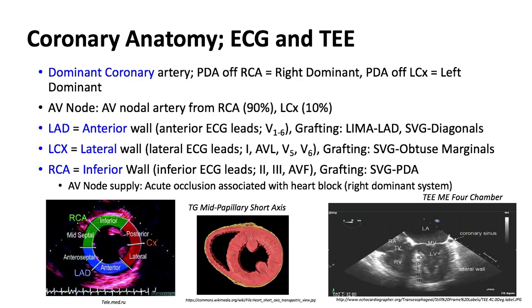The dominant coronary artery, by definition, is the coronary artery that gives off the posterior descending — which is usually the right coronary artery, but occasionally the posterior descending can come off the left circumflex, and then it's called a left dominant system. The AV node is usually supplied by the right coronary artery in 90% of patients, but in about 10% by the left circumflex. If someone had a right coronary artery occlusion and the AV node didn't get good blood supply, you could get AV block, especially with an inferior MI.